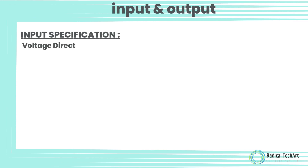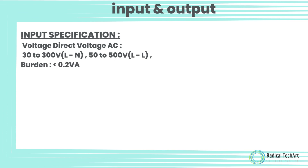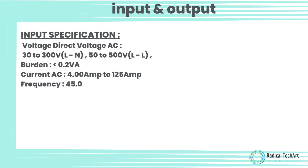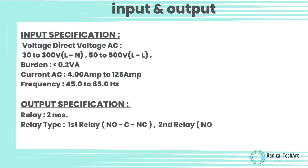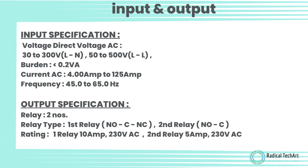Input Specification — Voltage: AC 30–300 Volt L-N, 50–500 Volt L-L; Burden: 0.2 VA. Current: AC 4 to 125 Ampere. Frequency: 45.0 to 65.0 Hertz. Output Specification — Relay: 2 numbers. Relay Type: 1st Relay NO/NC, 2nd Relay NO. Rating: 1st Relay 10 Ampere 230 Volt AC, 2nd Relay 5 Ampere 230 Volt AC.